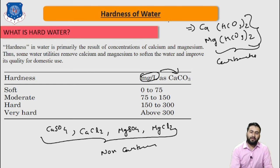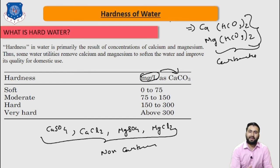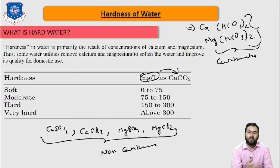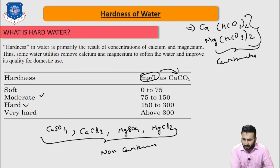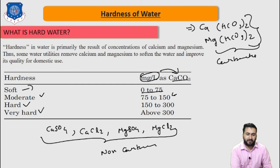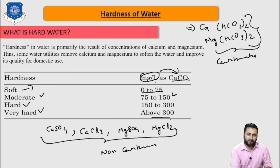For most applications, total hardness of 120 mg per litre or less and magnesium hardness of 40 mg per litre or less are acceptable design criteria for softening facilities. In general, the degree of hardness is classified as: soft (0–75 mg/L CaCO₃), moderate (75–150 mg/L), hard (150–300 mg/L), and very hard (above 300 mg/L). This is all about the hardness of water.